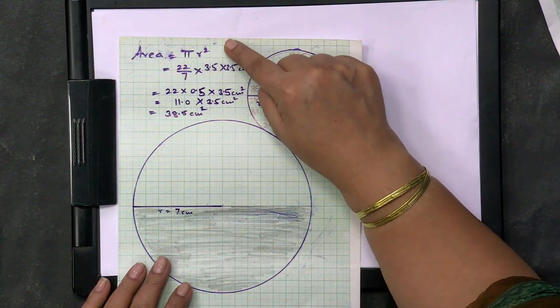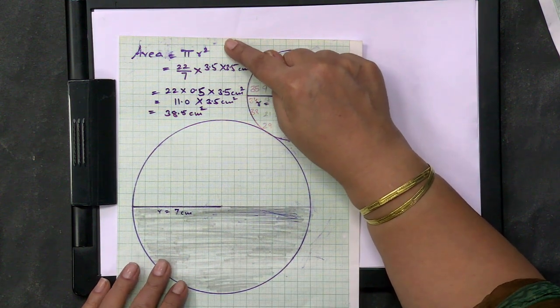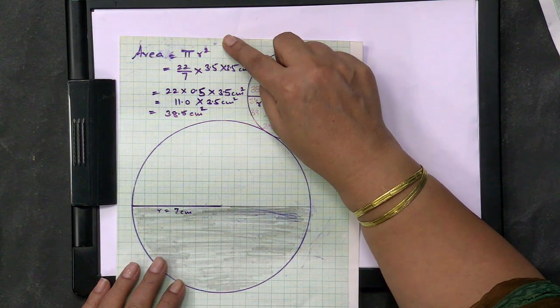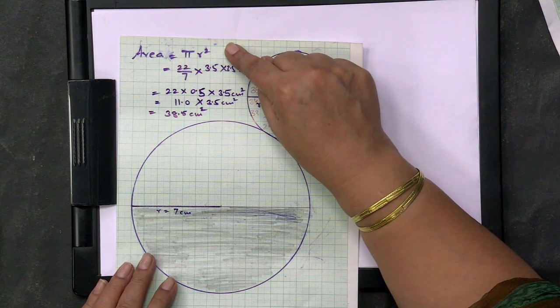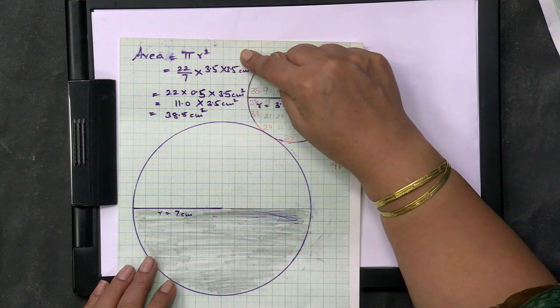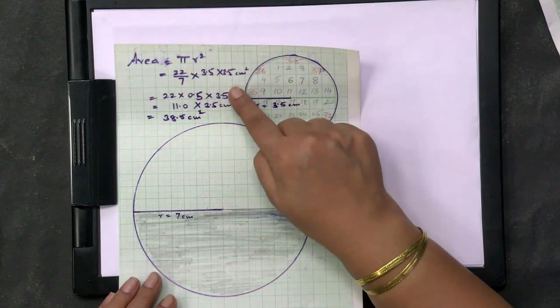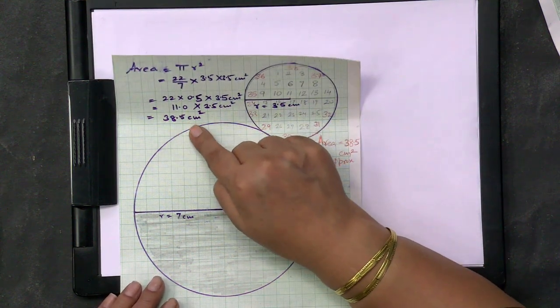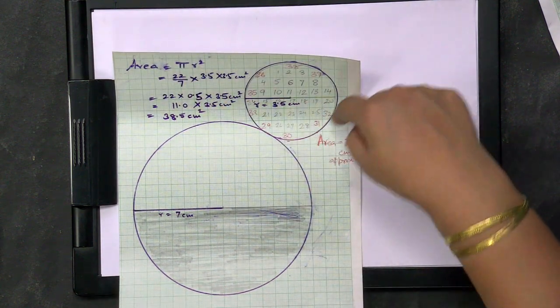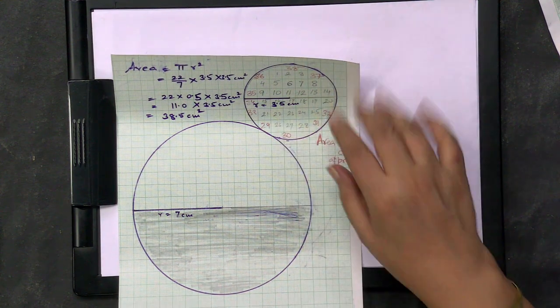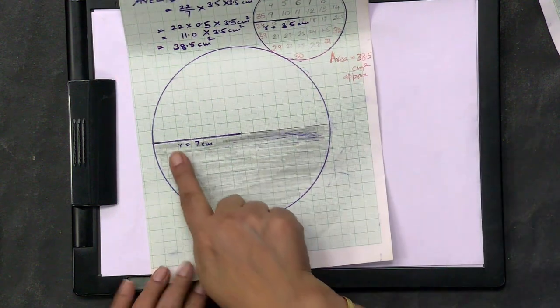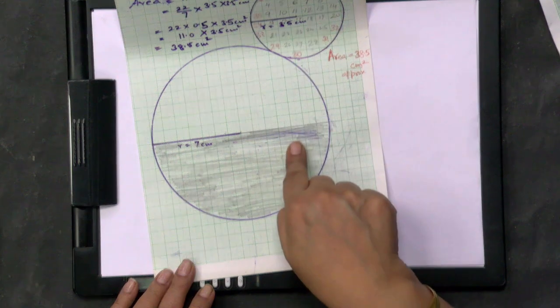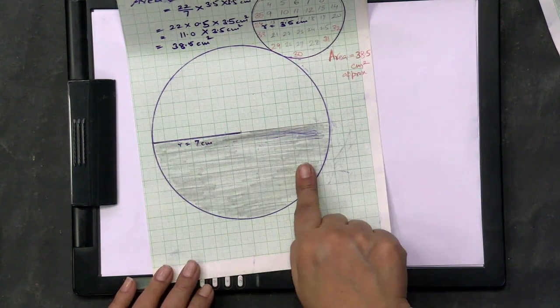This is why it's called area of circle. This is why we always get these units in square, like here we have radius of 3.5 cm, so this area is 22/7 into 3.5 cm square and we get 38.5 cm square.